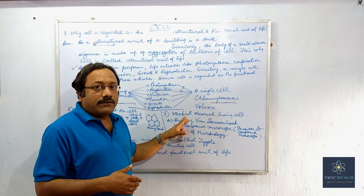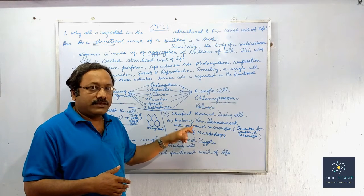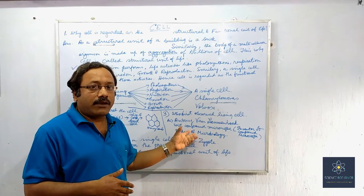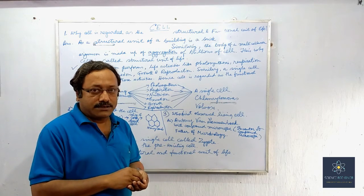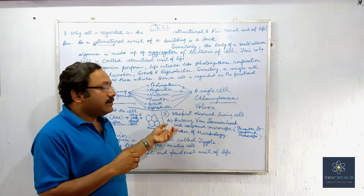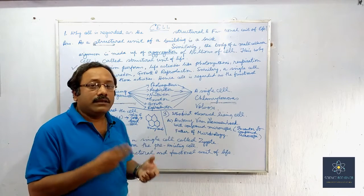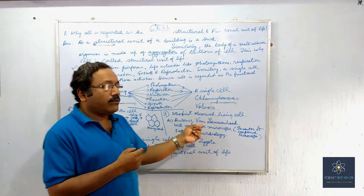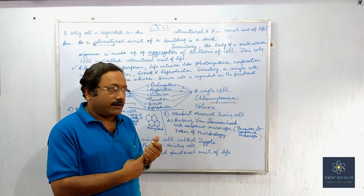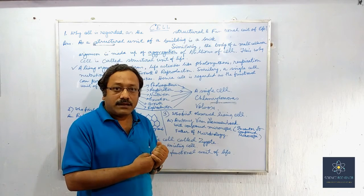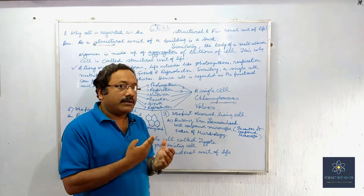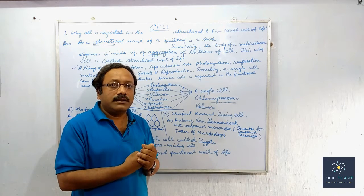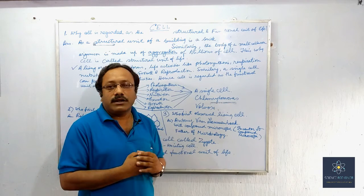Then Antony van Leeuwenhoek — he first observed the living cell. He observed living cells under the compound microscope, which has two lenses. From this part we get three important facts: number one, Antony van Leeuwenhoek first invented the compound microscope; number two, he first observed the living cell under that microscope; and number three, he is regarded as the father of microbiology.